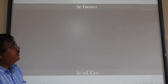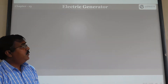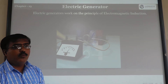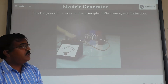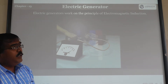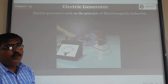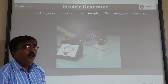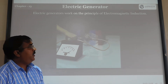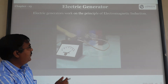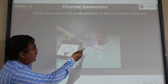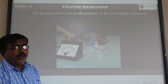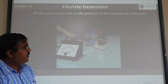First, let us look at the electric generator. The electric generator is similar to an electric motor in its construction. It works on the principle of electromagnetic induction. We take a galvanometer with connecting wires, north and south poles of a magnet, and a rectangular coil.